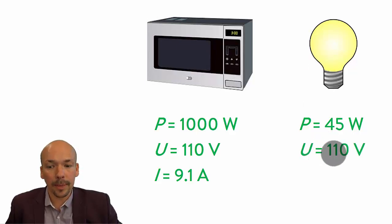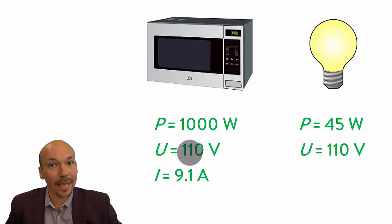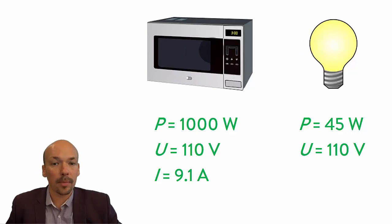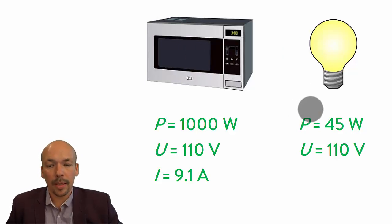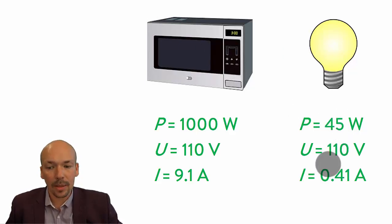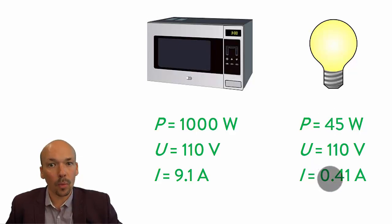Also, the light bulb is using 110 volts, the same as the microwave because they're both using the power socket. And to make this power less, it only needs 0.41 ampere.